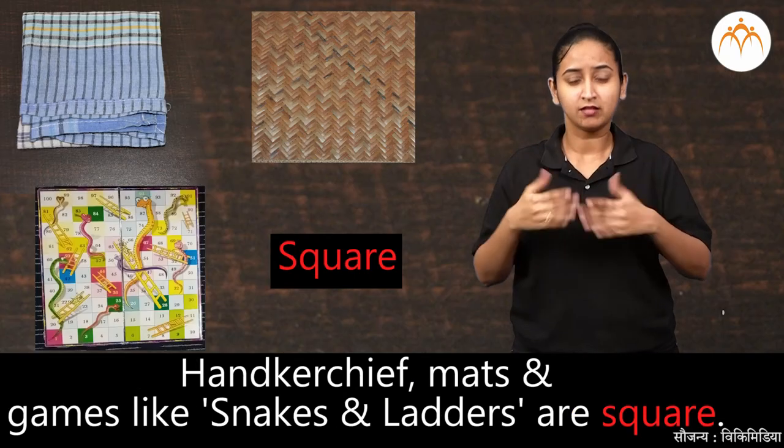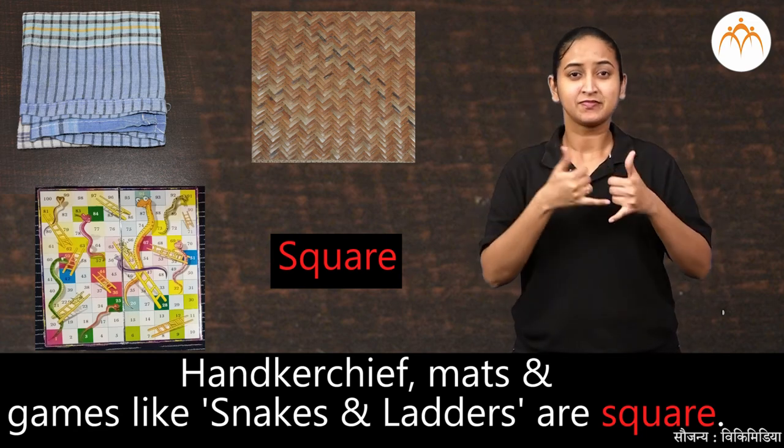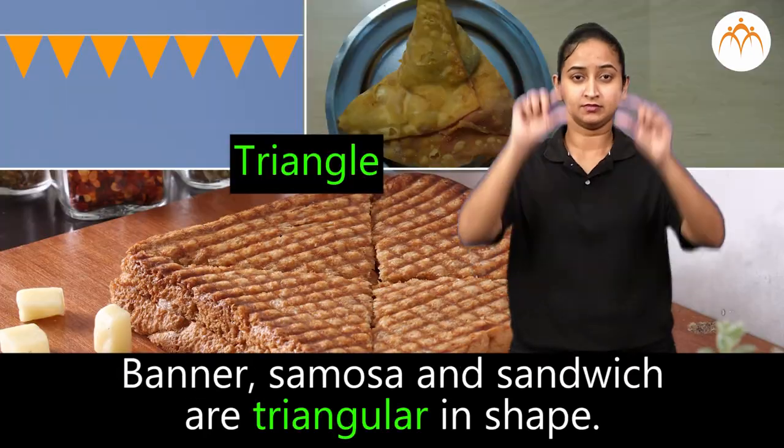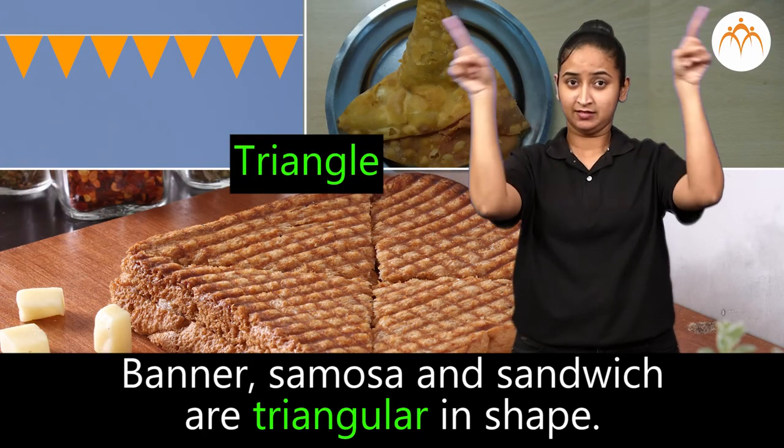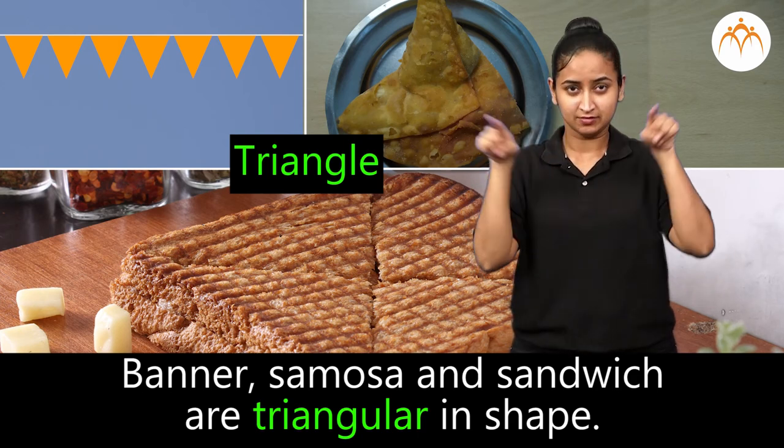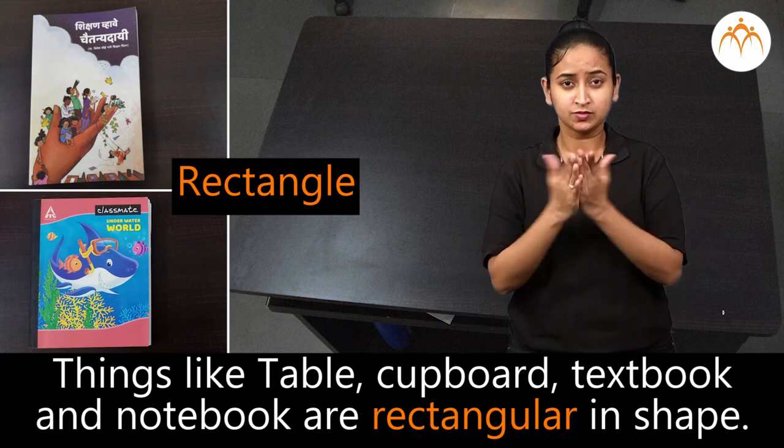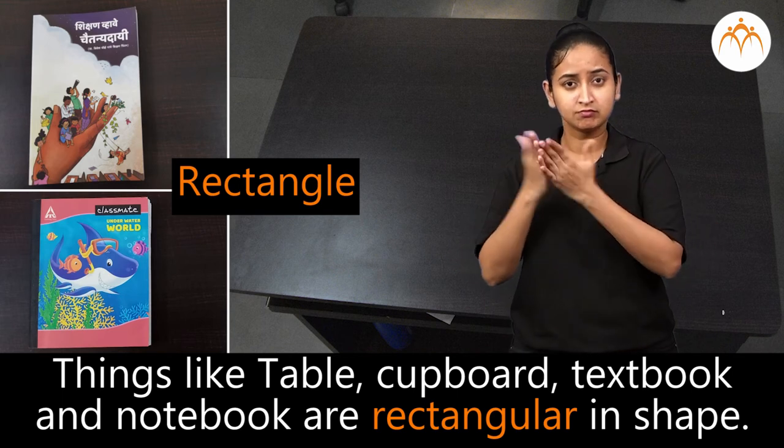Handkerchief, mats and games like snakes and ladders are square. Banner, samosa and sandwich are triangular in shape. Things like table, cupboard, book and notebook are rectangular in shape.